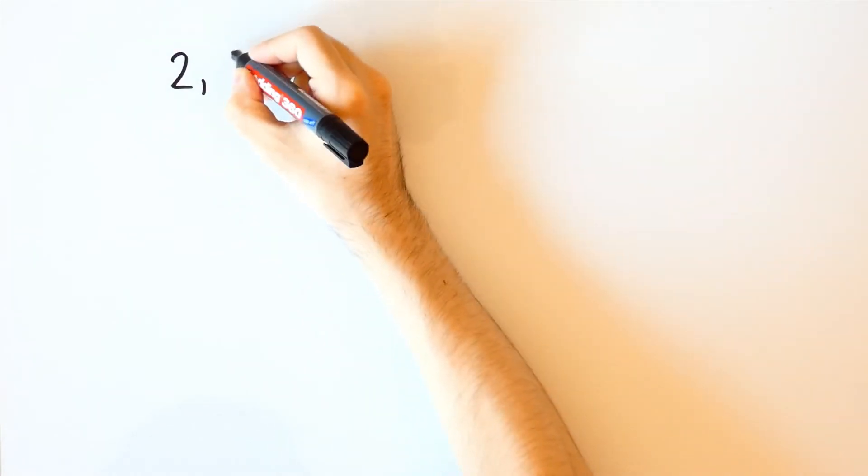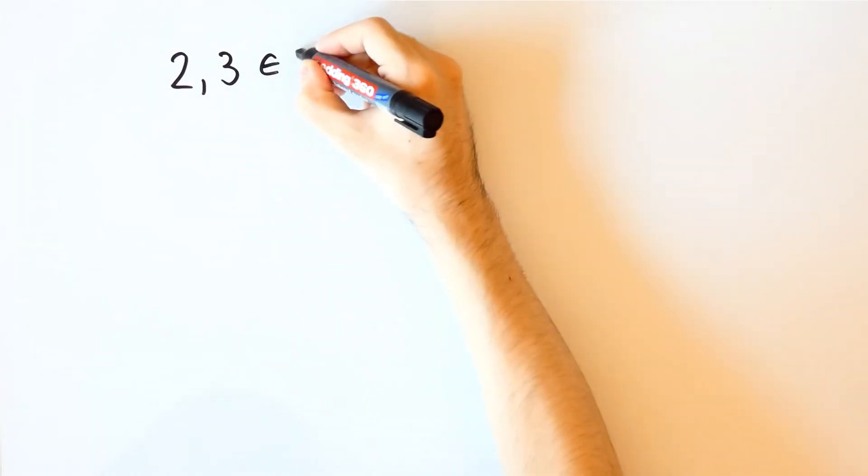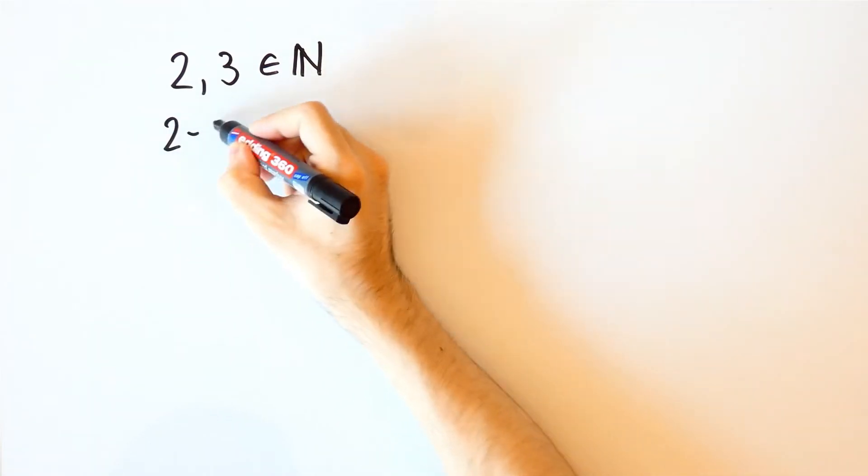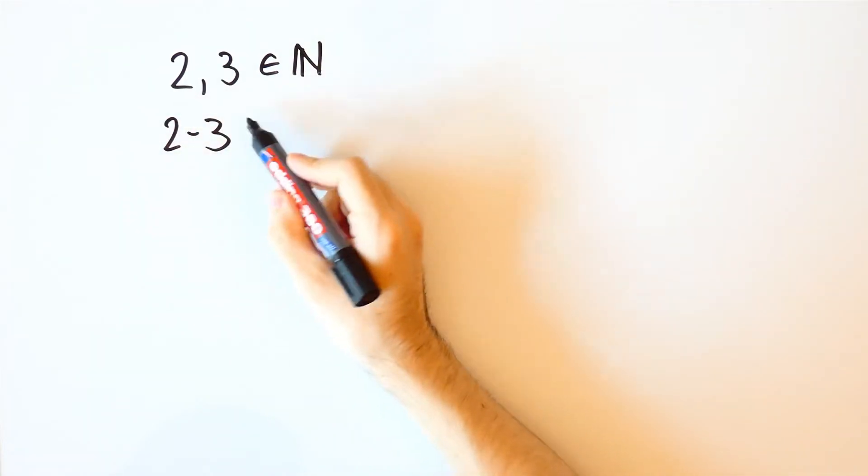However, with subtraction that is not the case, because for instance 2 and 3 are natural numbers, but the difference is not even defined on the set of natural numbers.